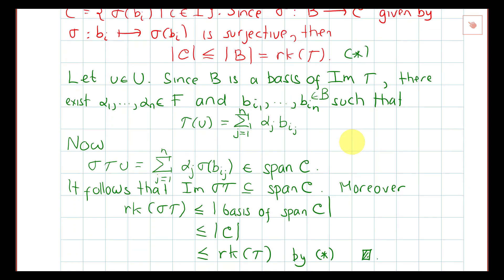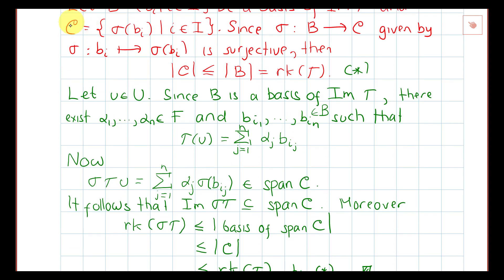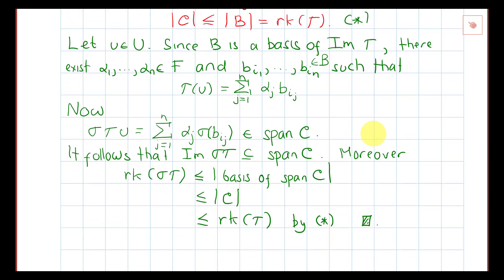Now if we apply sigma to tau(u), by the linearity of sigma, sigma(tau(u)) can be written as the sum of alpha_j times sigma(b_{i_j}). Since each sigma(b_{i_j}) is an element of C, this expression belongs to the span of C. Since u is an arbitrary element of U, it follows that the image of tau sigma is contained in the span of C.